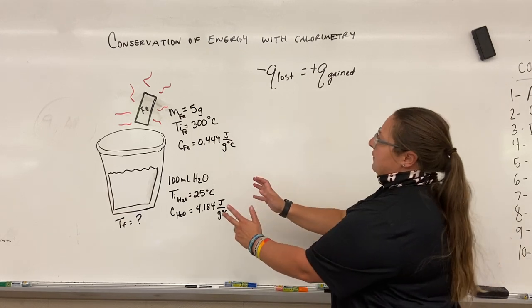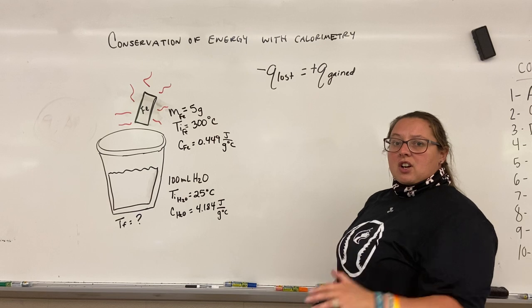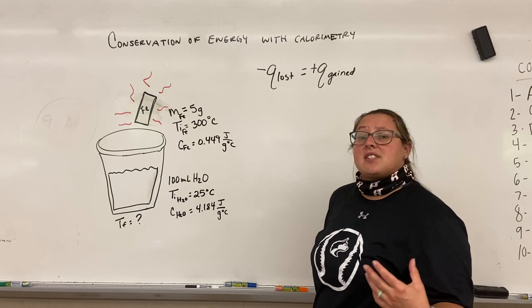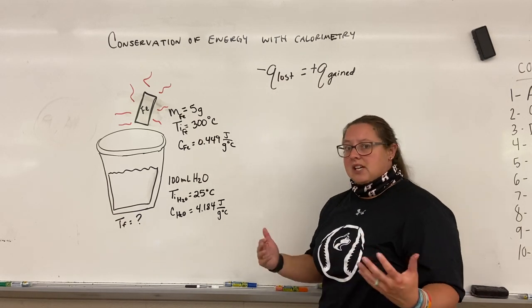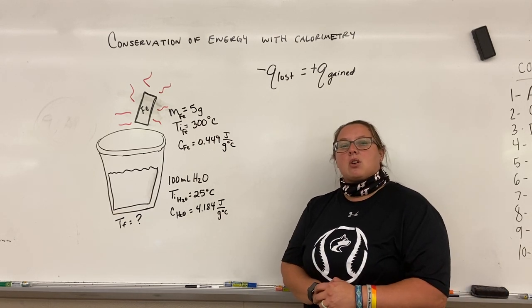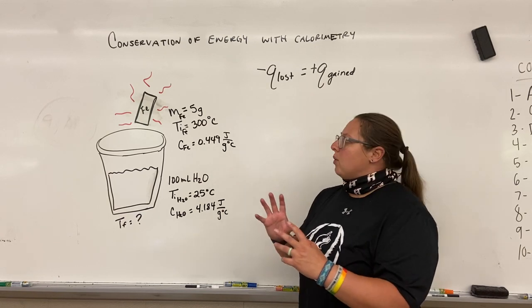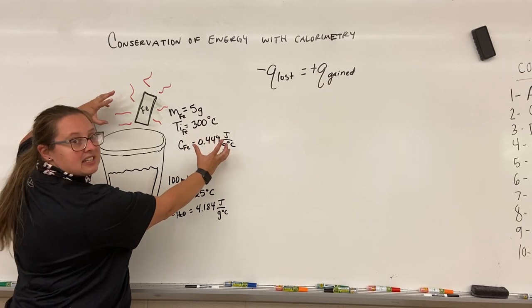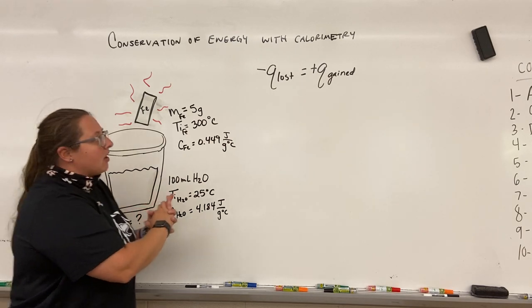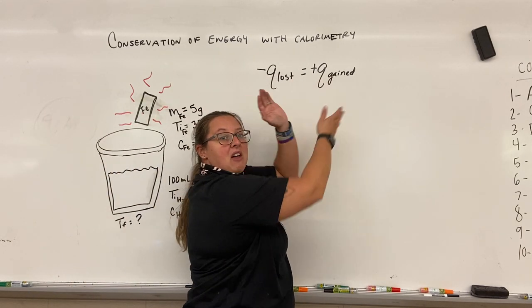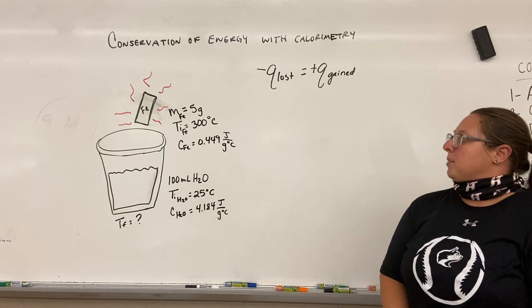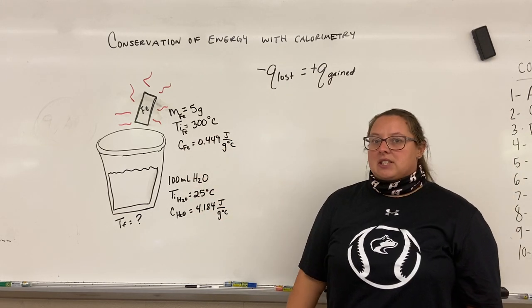To find that final temperature, we need to use the conservation of energy equation. In previous problems, you've only had to do q = mcΔT for one substance. But here we have heat generated from the iron and heat associated with the water, so when we put these two together they exchange energy. That's why we have to use this approach rather than just doing q = mcΔT for one of them.